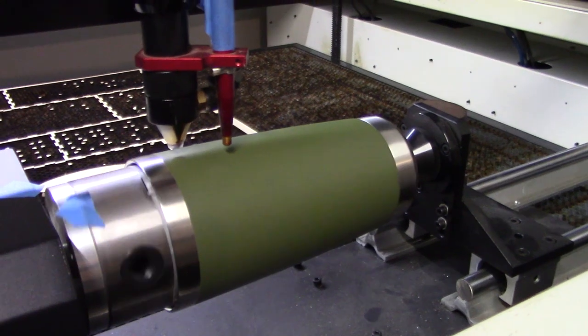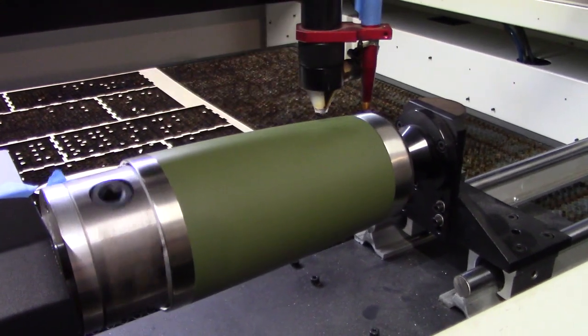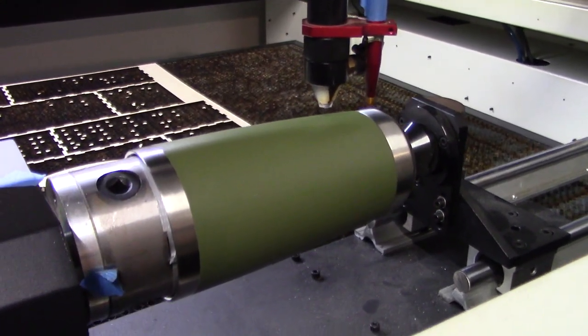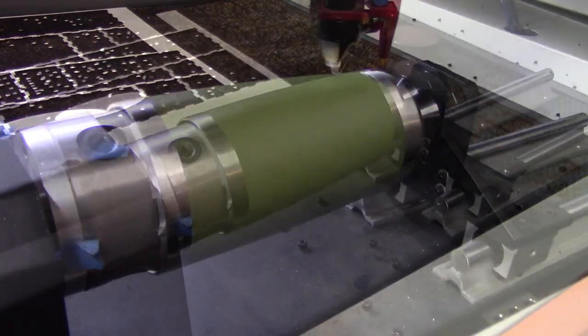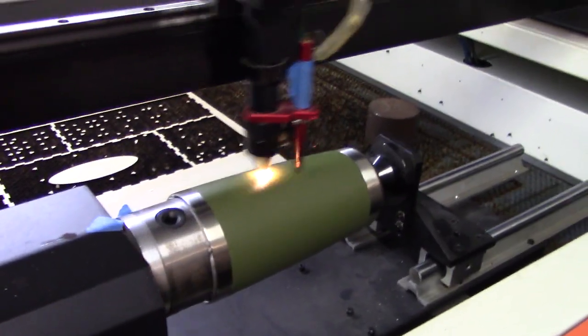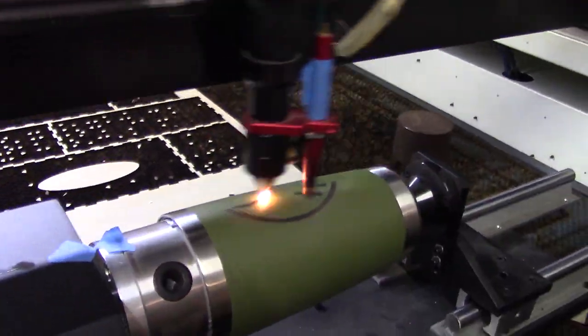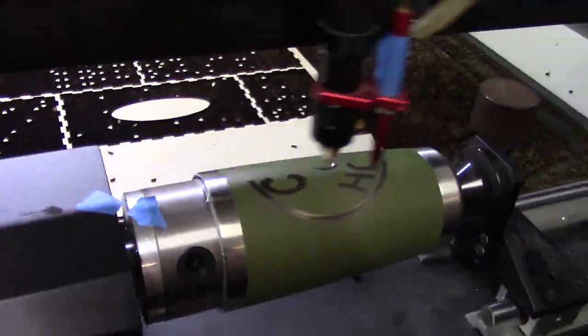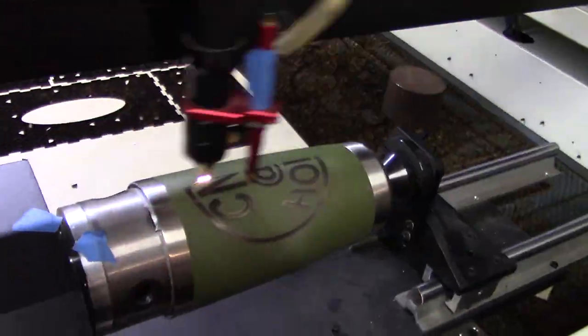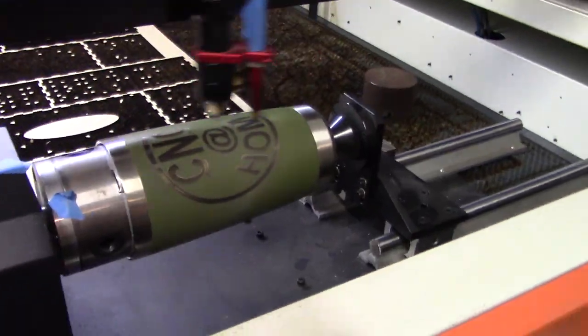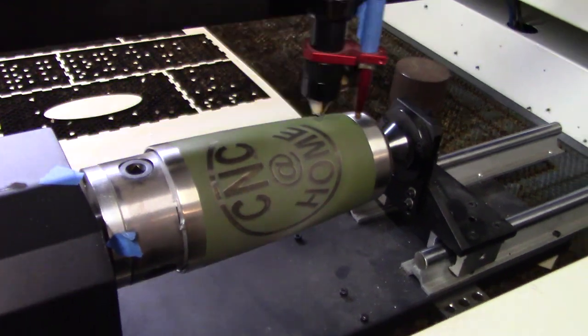Working on this stainless steel tumbler is basically the same thing. We define where we're going to cut. We have the rotary chuck expanded out on one side and then we have the quill stuck into that disc on the other side to hold it in place. Here we're cutting the CNC at home logo.